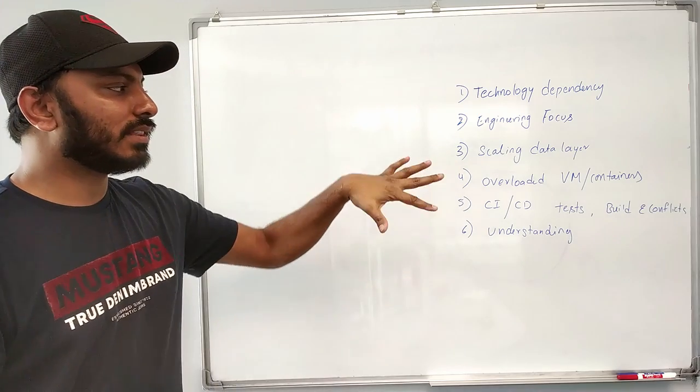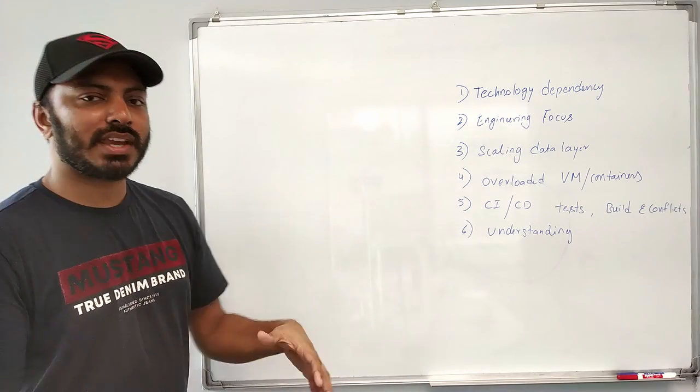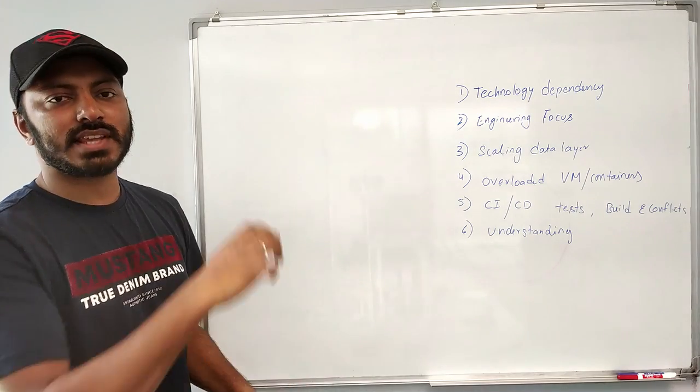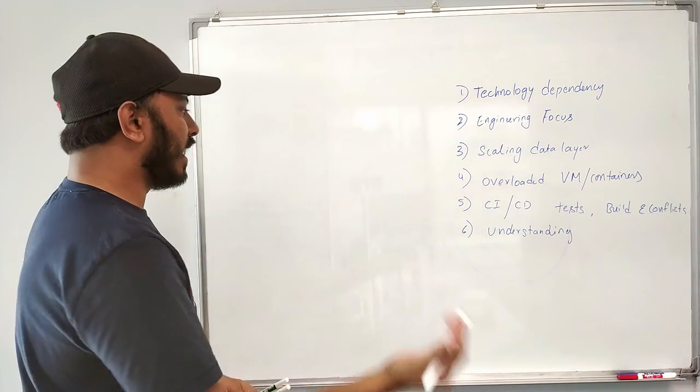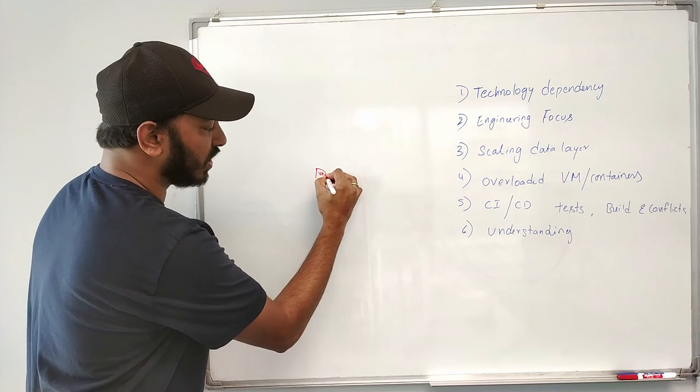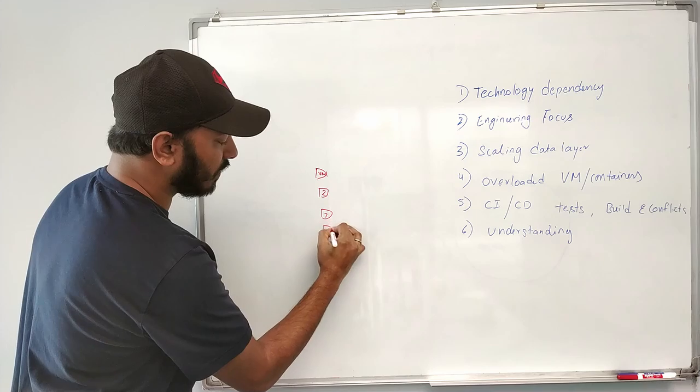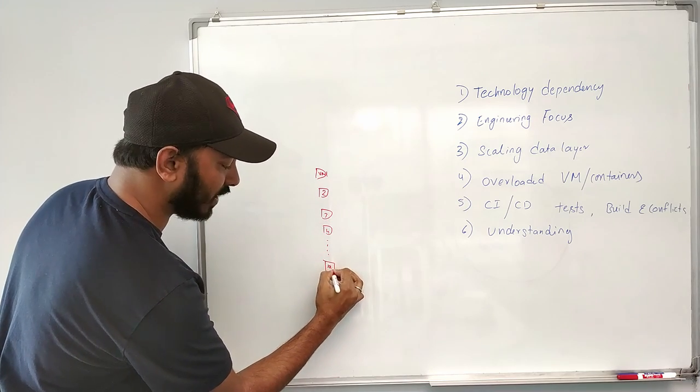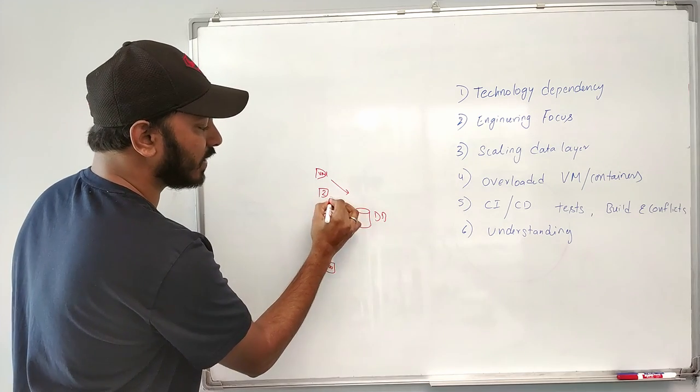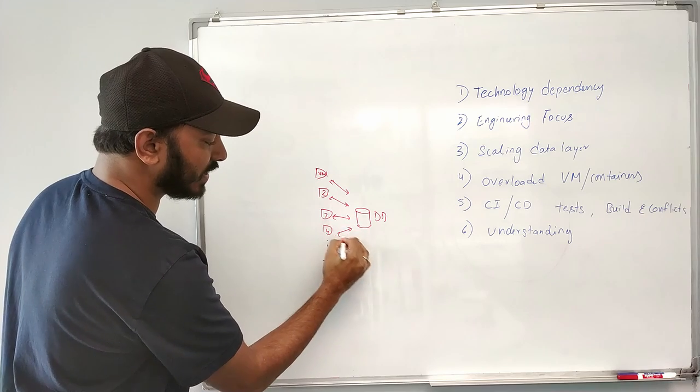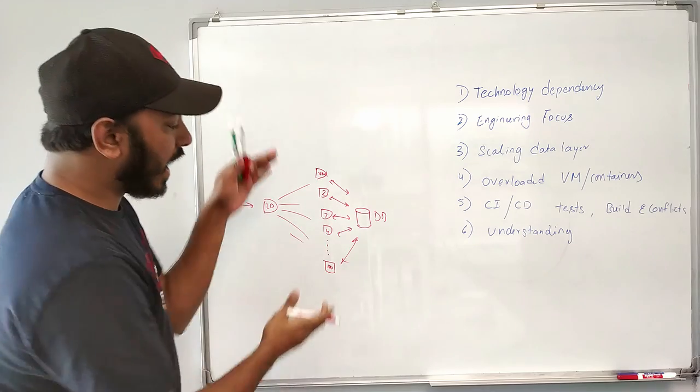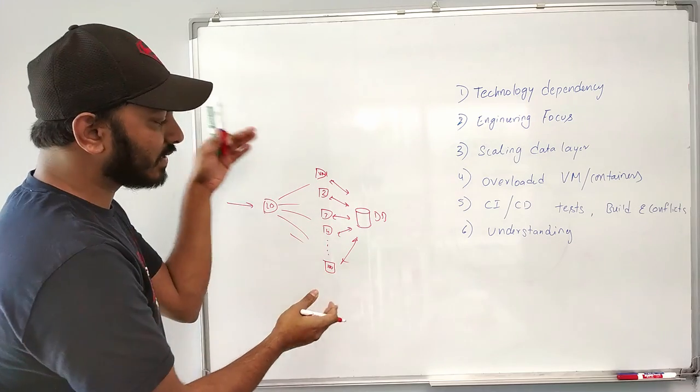And the next thing is scaling is also kind of a problem. As I mentioned, we can easily scale the virtual machines, but the problem is as we have more and more virtual machines, everyone is basically talking to the same database. As I mentioned, there are virtual machine one, two, three, four, you have hundreds. Now, everything is basically talking to one database, right? Every virtual machine is talking to the same database, even though you have load balancer, it's basically distributing the traffic over here. Every virtual machine or container is talking to the same database.